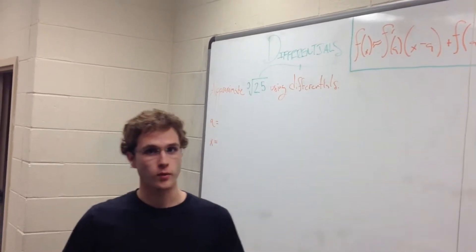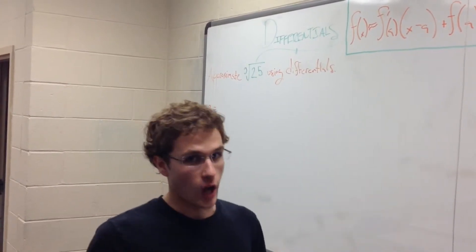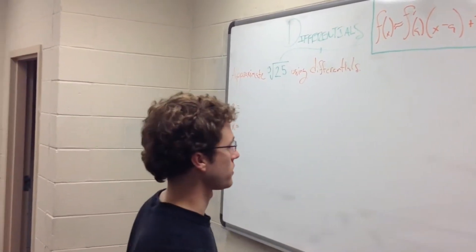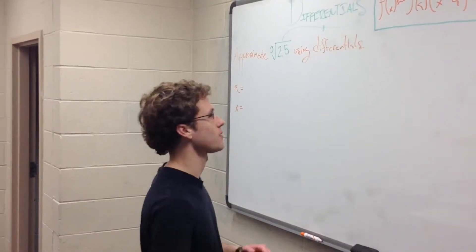Well, it sure is a good thing we want to approximate it using differentials because wow, what an ugly number the cube root of 25 is. It's certainly not clean. It's going to be a big, ugly, long, unattractive decimal.